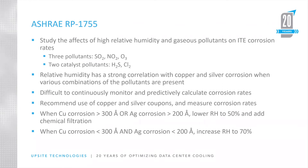Any time you see a copper corrosion rate in excess of 300 angstroms or silver in excess of 300 angstroms, the best way to cut down on that corrosion rate is to lower the relative humidity to 50% and add some chemical filtration — maybe some carbon scrubbers — to take some of those pollutants out of the airstream.